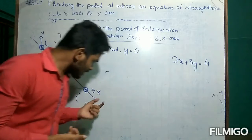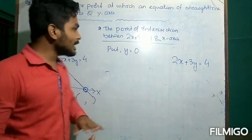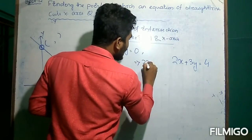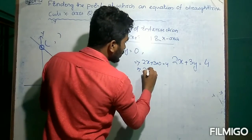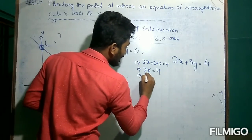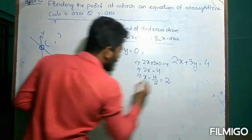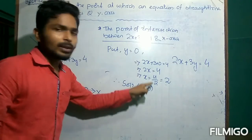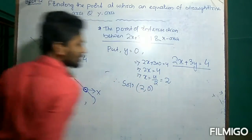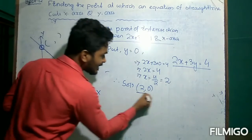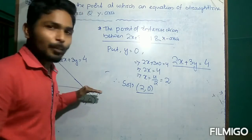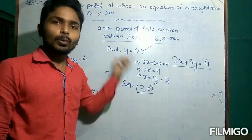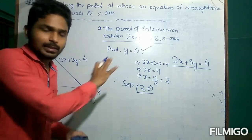Why do we put y equal to 0? Because on the x-axis the y-coordinate is always 0. So in the original equation, putting y equal to 0: 2x plus 3 into 0 is equal to 4, so 2x equals 4, giving x equal to 4 by 2, that is 2. Hence the solution is (2, 0) — always write the x-coordinate first, then the y-coordinate. So this straight line meets the x-axis at the point (2, 0).